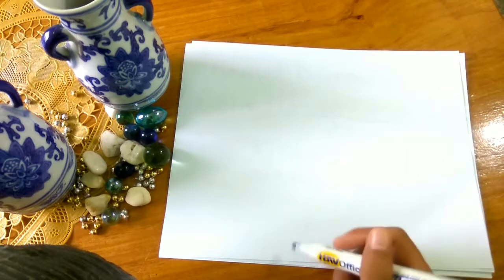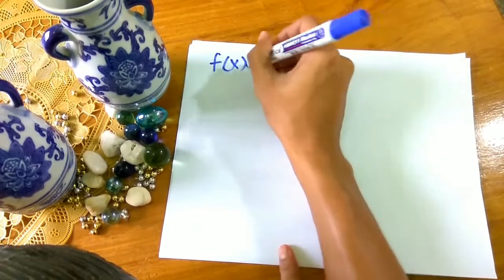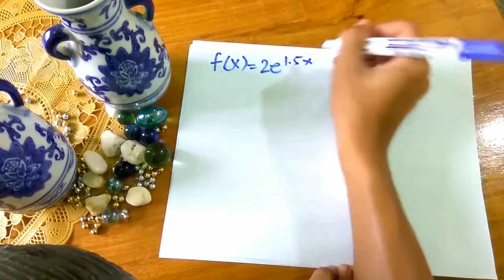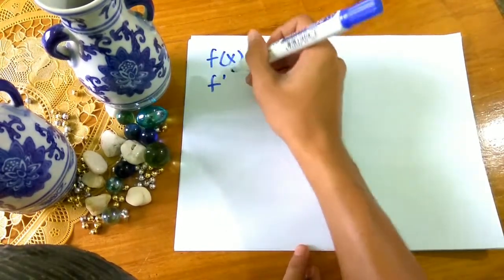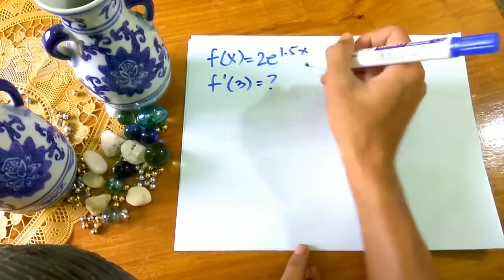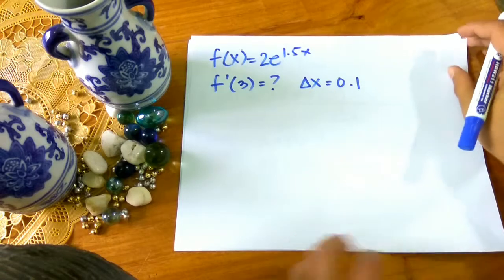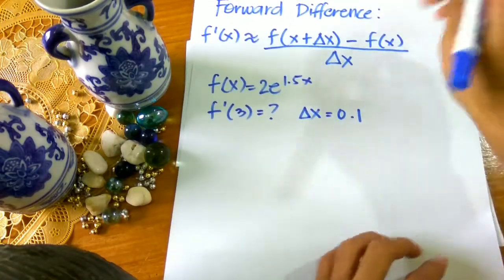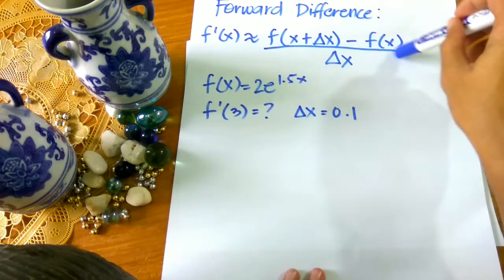So para maintindihan natin lalo ang forward difference, let's have an example. The function of x is equal to 2e raised to 1.5x. Let's find the derivative of the function given that x is equal to 3 and the step size delta x is equal to 0.1. Since we already know the formula for the forward difference: f(x + Δx) minus f(x) over delta x.